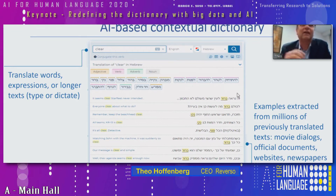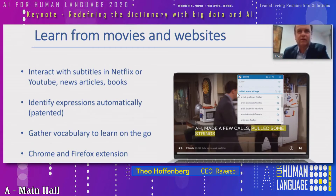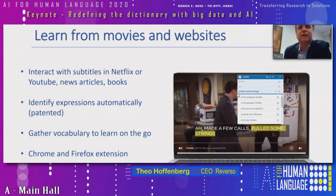For example, for 'how are you,' you have ten different variants and ways to say it. For something like screwdrivers, you have many different ways to use it. Our ecosystem includes a browser extension that allows you to use this tool within your browser while watching movies, reading news articles, or reading books — and you can directly interact with it to get the translation in the context of your sentence.